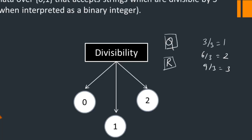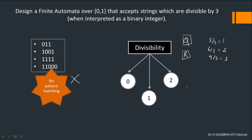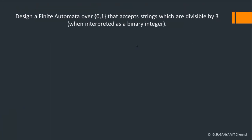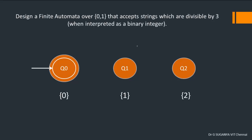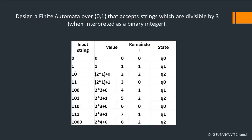Pattern matching cannot be used, so we go for the divisibility concept. To start with the design, let's draw 3 states to represent the 3 possible remainders: a state representing remainder 0, a state representing remainder 1, and a state representing remainder 2. When any string leaves 0 as the remainder it must be accepted, so the remainder-0 state is the final state and the other two are non-final states. Now let's understand how values are computed as we read binary strings from left to right.